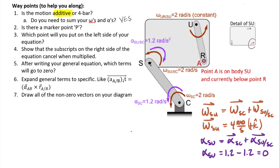Continuing down the problem: is there a marker point? In this problem it's called point A, located right underneath point R. For the left side of our equation, I prefer the rule of putting the point adjacent to the marker point. My marker point is point A, so adjacent to it is point R. We write the velocity of R, building from point C to S, then S to A, with the final term being R relative to A.